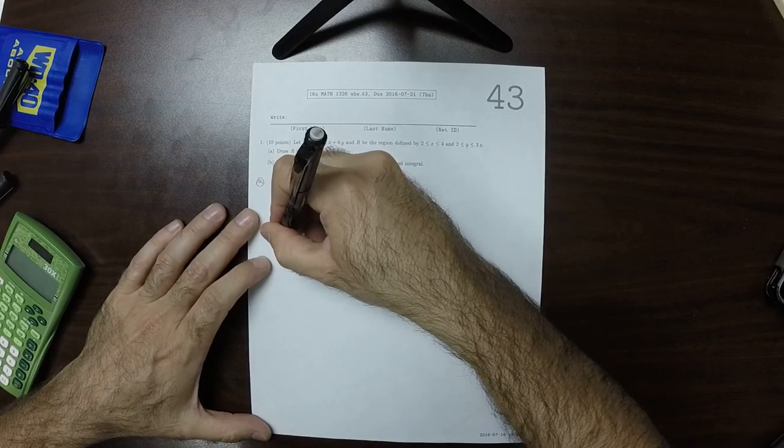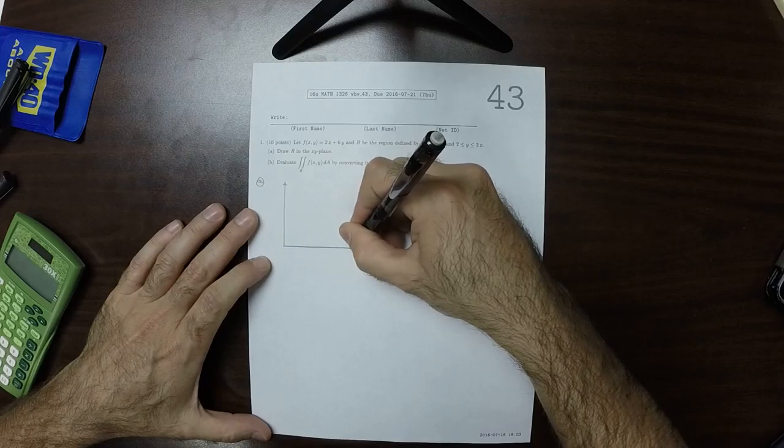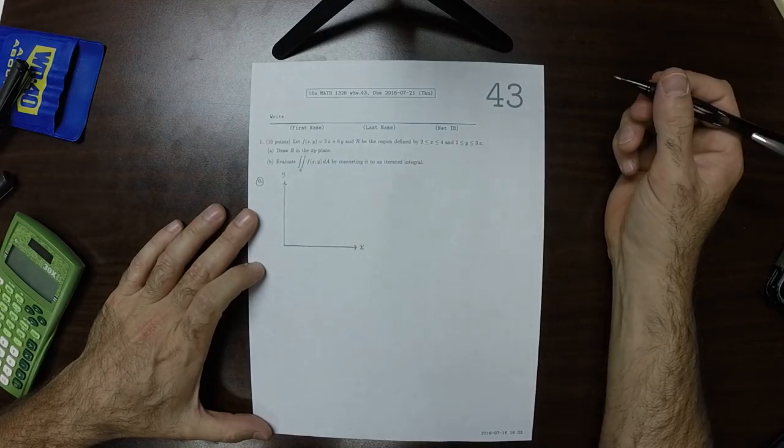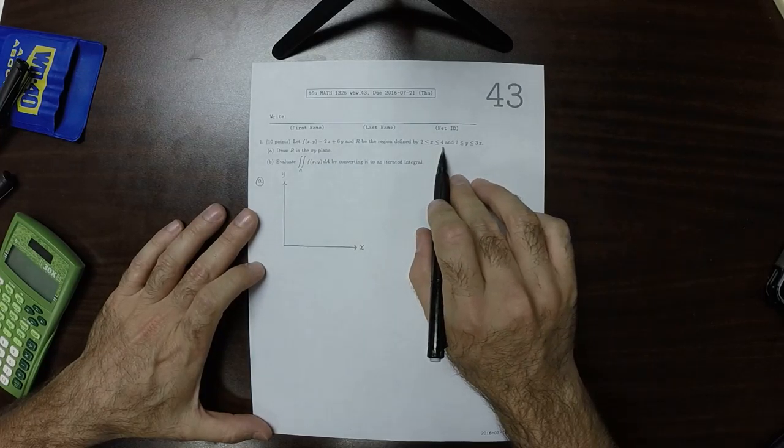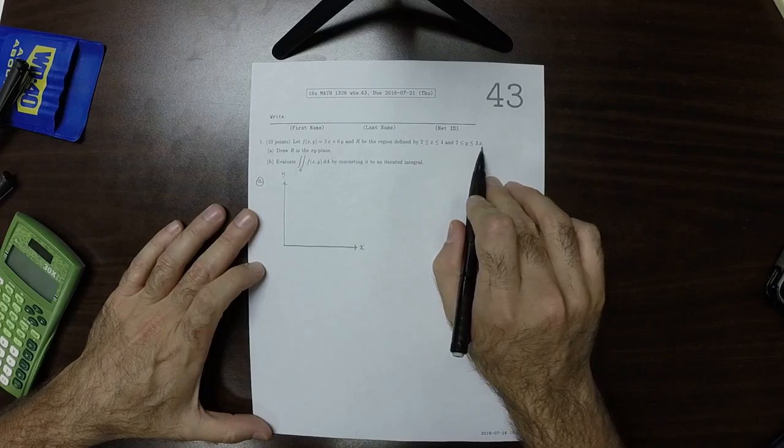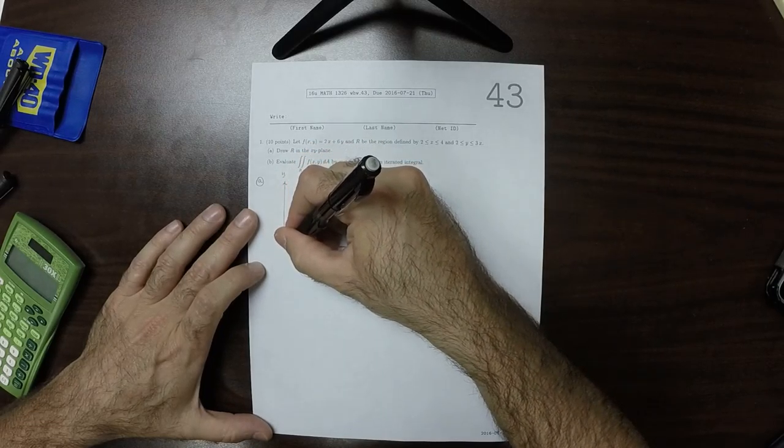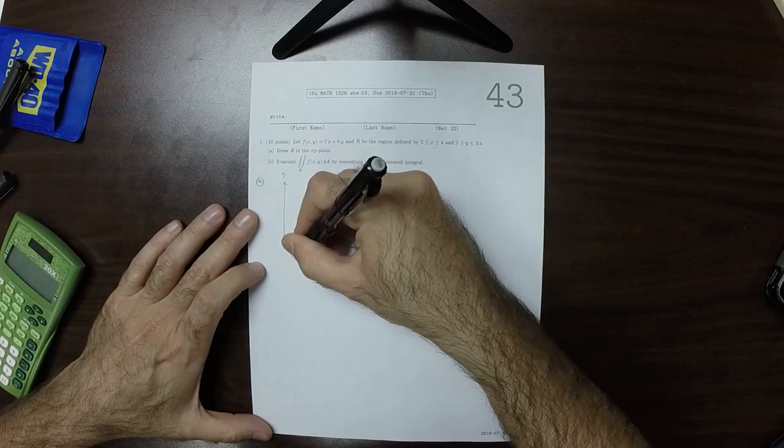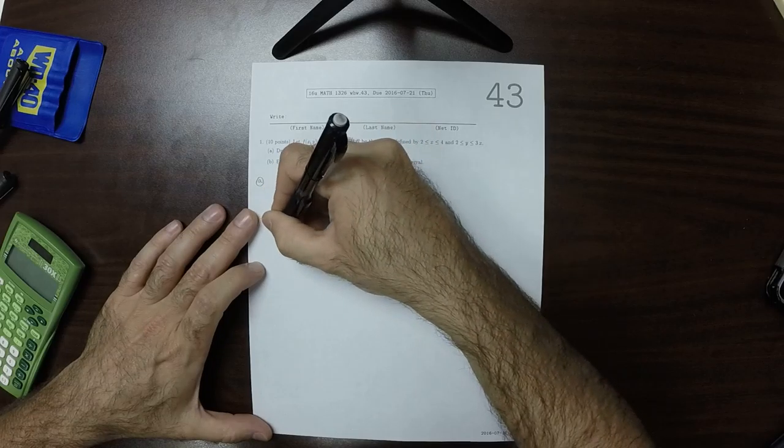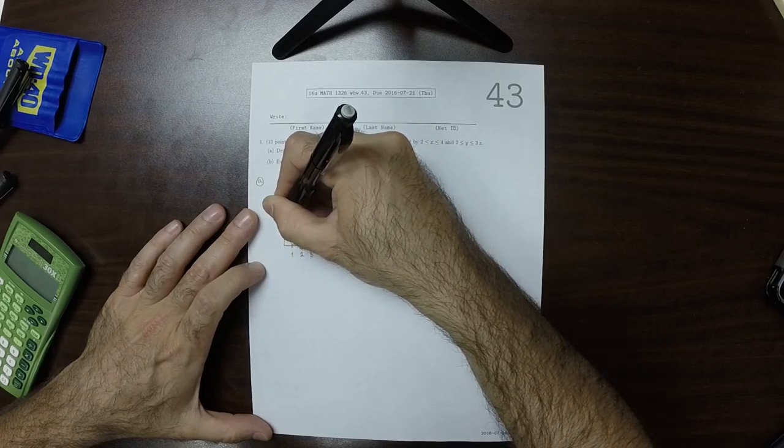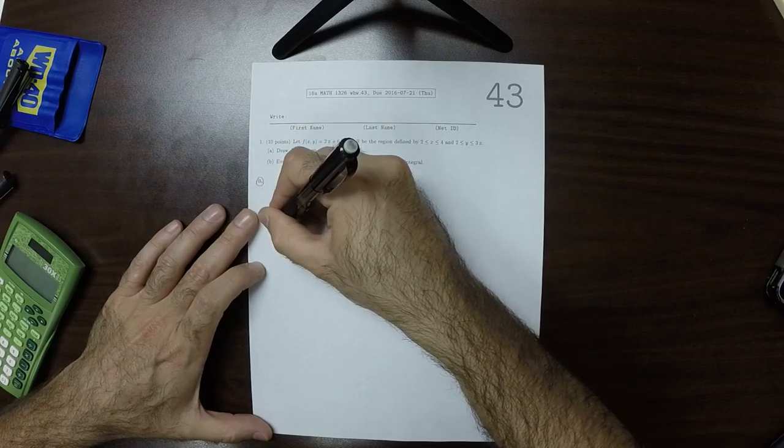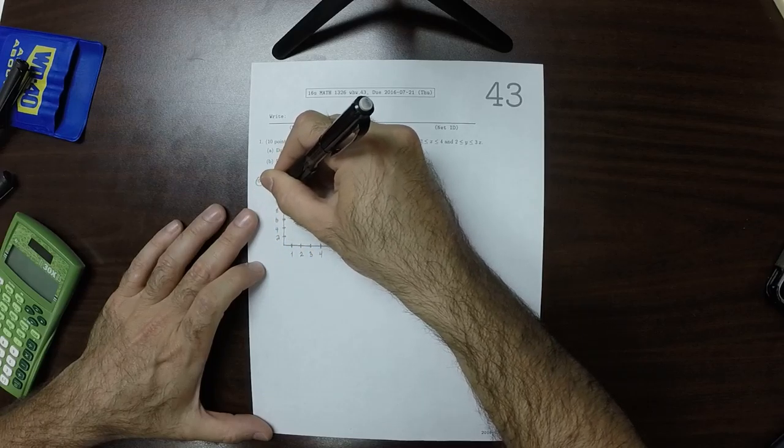So like this, y and x. So at x is 4, 3x is 12, so we'll need to have a different scale on the x- and y-axis to make this work. So 1, 2, 3, 4. And how about 2, 4, 6, 8, 10, 12.